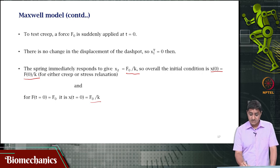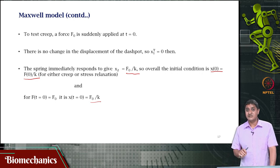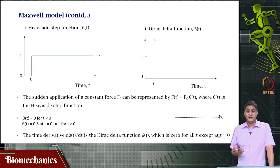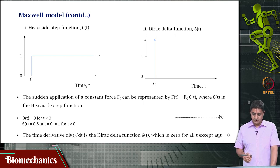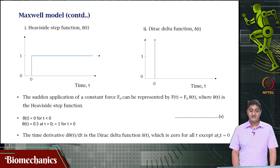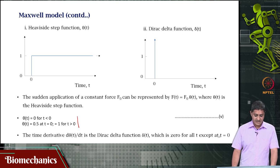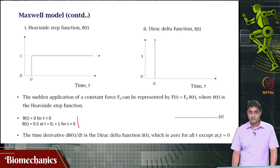Why is this? Because the dashpot cannot immediately respond at t = 0 — there is no displacement in the dashpot at that instant, though it will deform later. To model a sudden application of force, we use the Heaviside step function. The application of a constant force is F(t) = F₀·θ(t), where θ(t) = 0 for t < 0, 0.5 at t = 0, and 1 for t > 0.